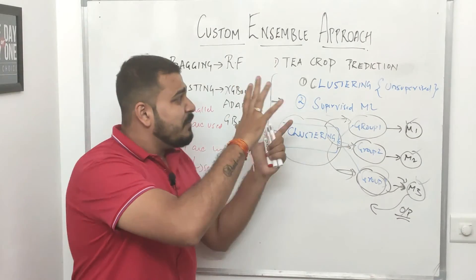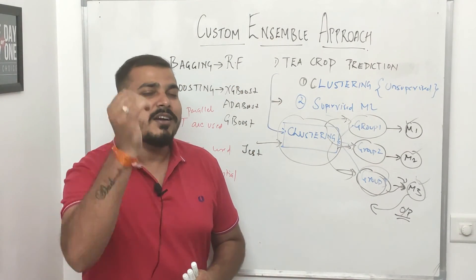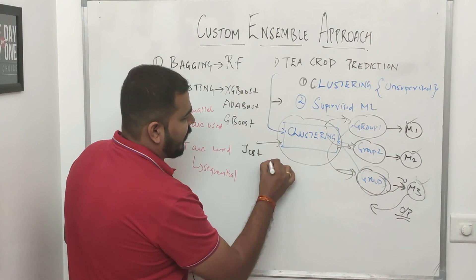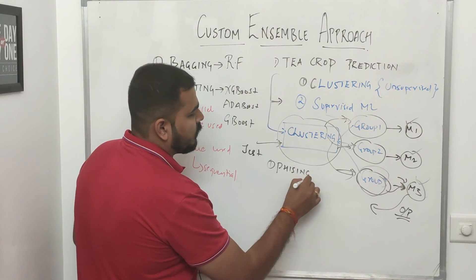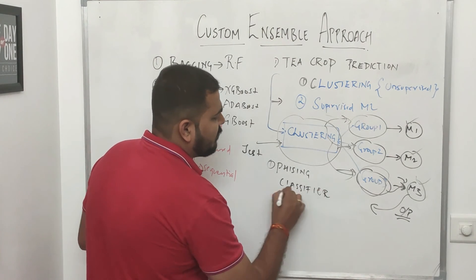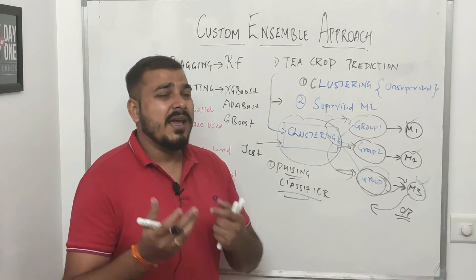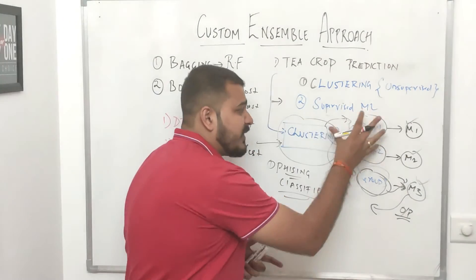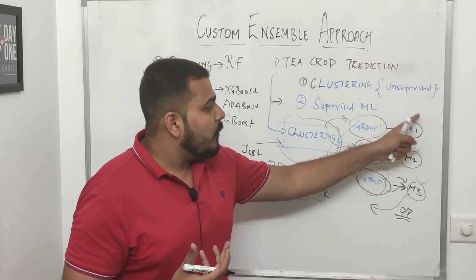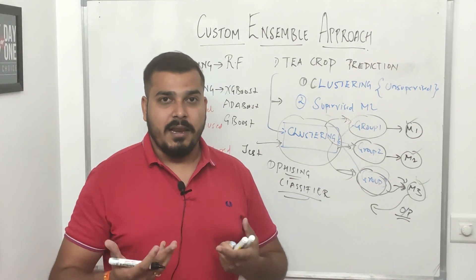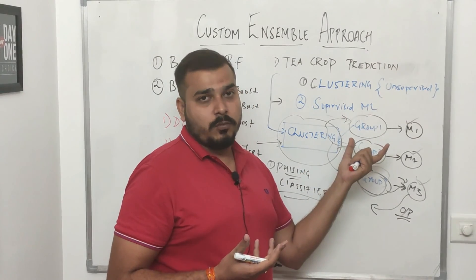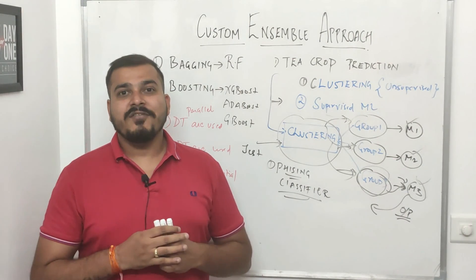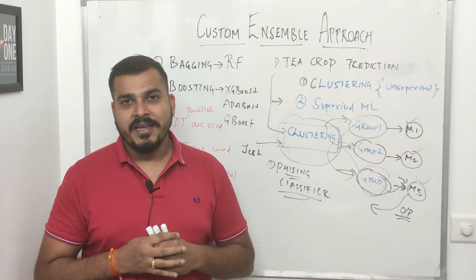That was a pretty thorough explanation of the custom ensemble approach. Try to solve any problem using this approach. The reason it works well is that by splitting the data into specific groups, each model is focused and trained on a particular kind of data, so it performs better. One more example I applied this to is the fishing classifier. I hope you like this video — please subscribe if you haven't already. See you in the next video. Have a great day, thank you, bye bye!